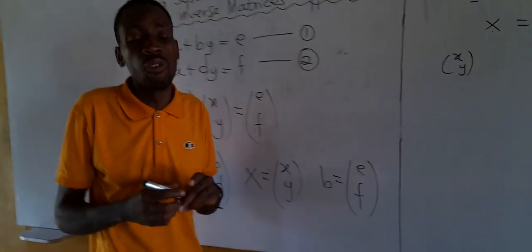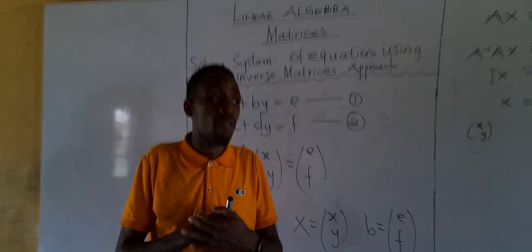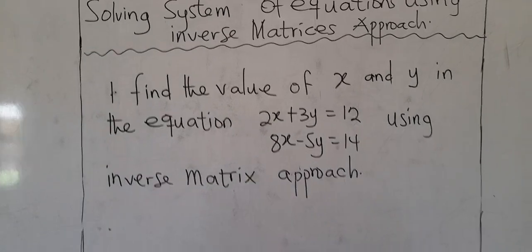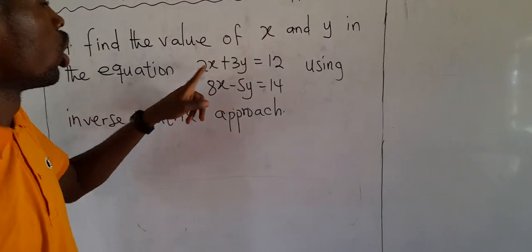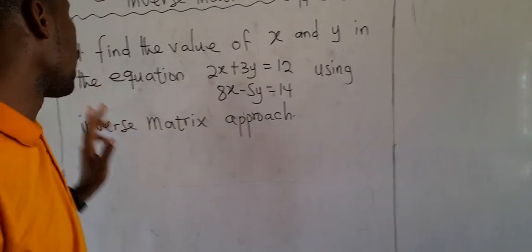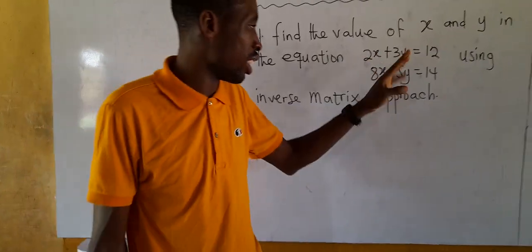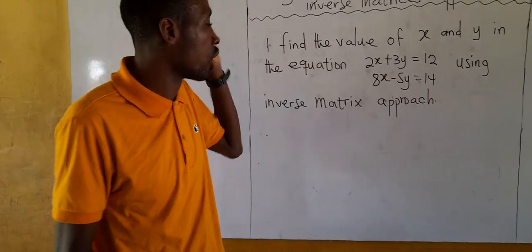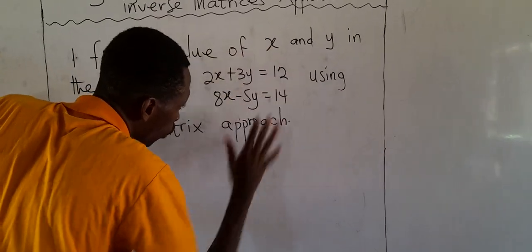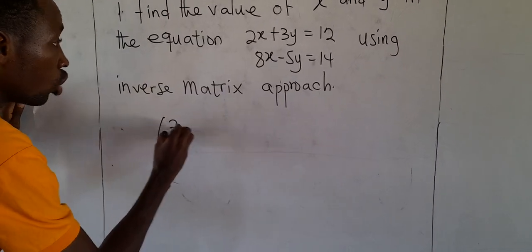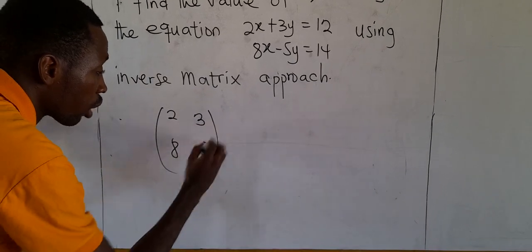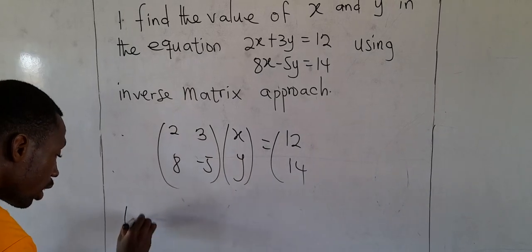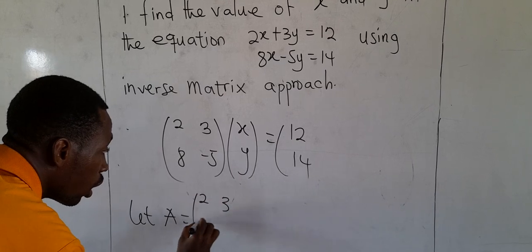Let's solve our first question: find the values of x and y in the equations 2x + 3y = 12 and 8x − 5y = 14 using the inverse matrix approach. We rewrite the system in matrix form as [2, 3; 8, −5] times [x; y] = [12; 14]. We let A = [2, 3; 8, −5], capital X = [x; y], and B = [12; 14]. So AX = B, and X = A⁻¹B.